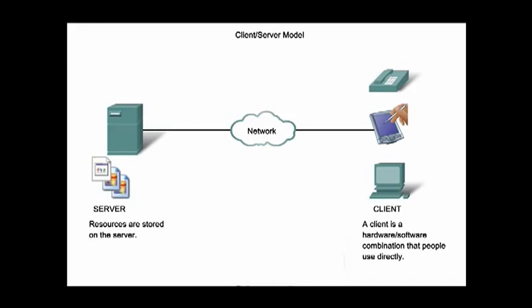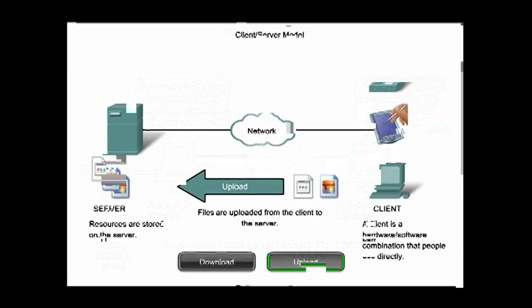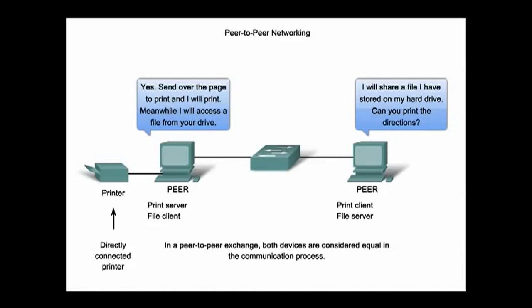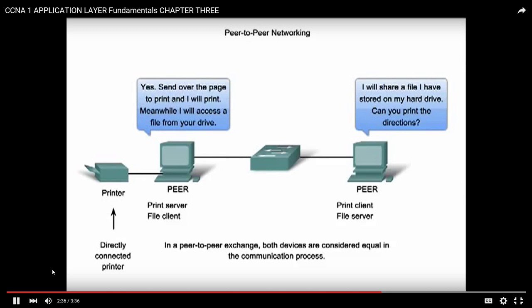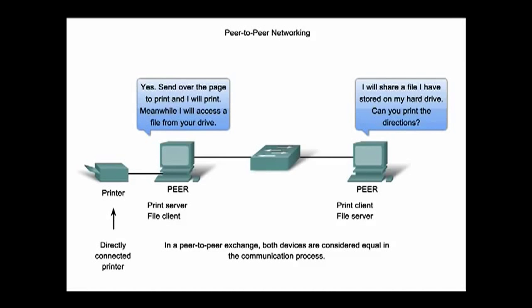When people attempt to access information that is not stored on their local device, then the client-server model is initiated. In the client-server model, the device requesting the information is a client and the device responding to the request is a server, both of which are considered to be in the application layer. In addition to the client-server model, there is also a peer-to-peer model. Peer-to-peer networking involves two distinct forms: the first is peer-to-peer network design, and the second is peer-to-peer applications. In a peer-to-peer network, two or more computers are connected via a network and can share resources without having a dedicated server. Each of these end devices can function as either a server or a client on a per-request basis.